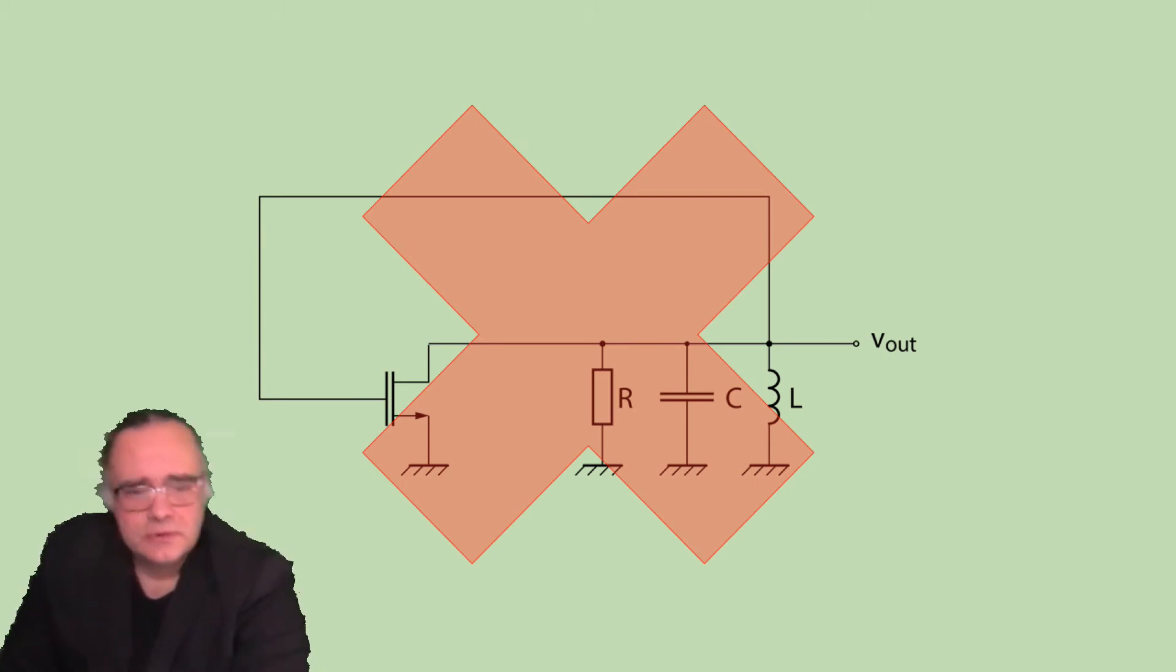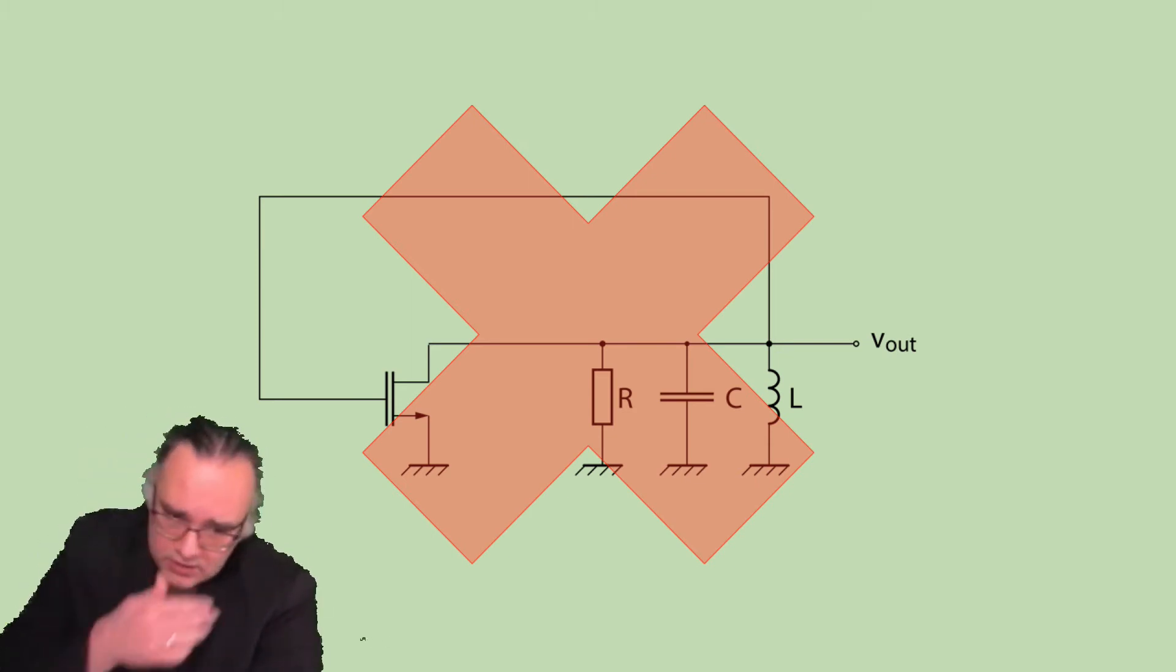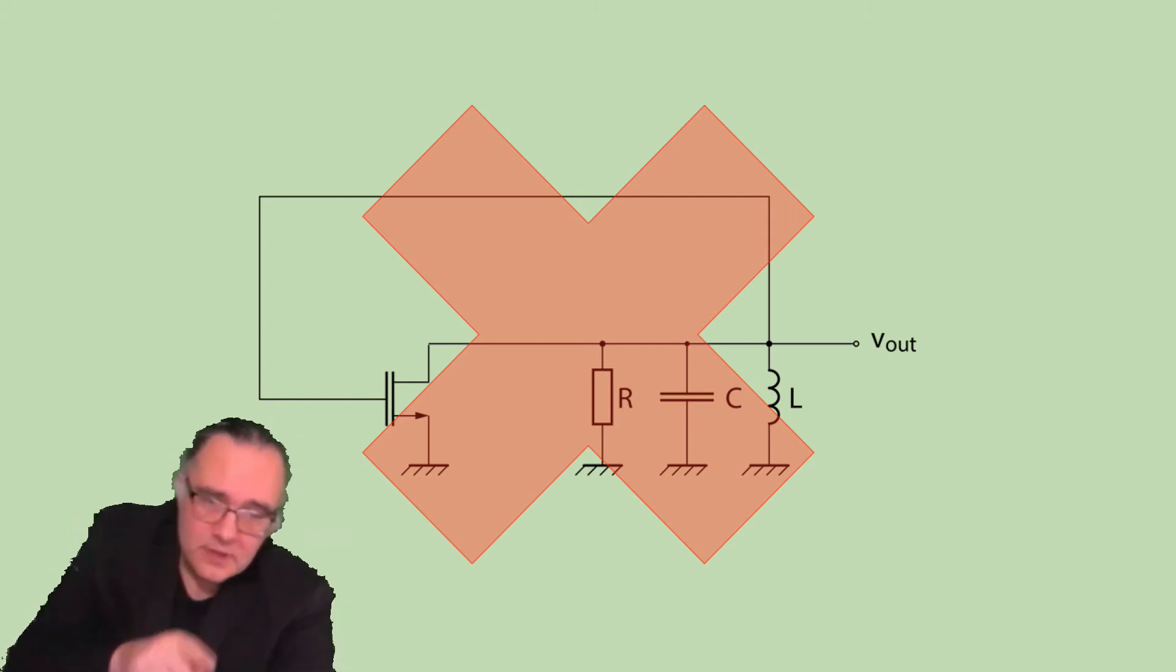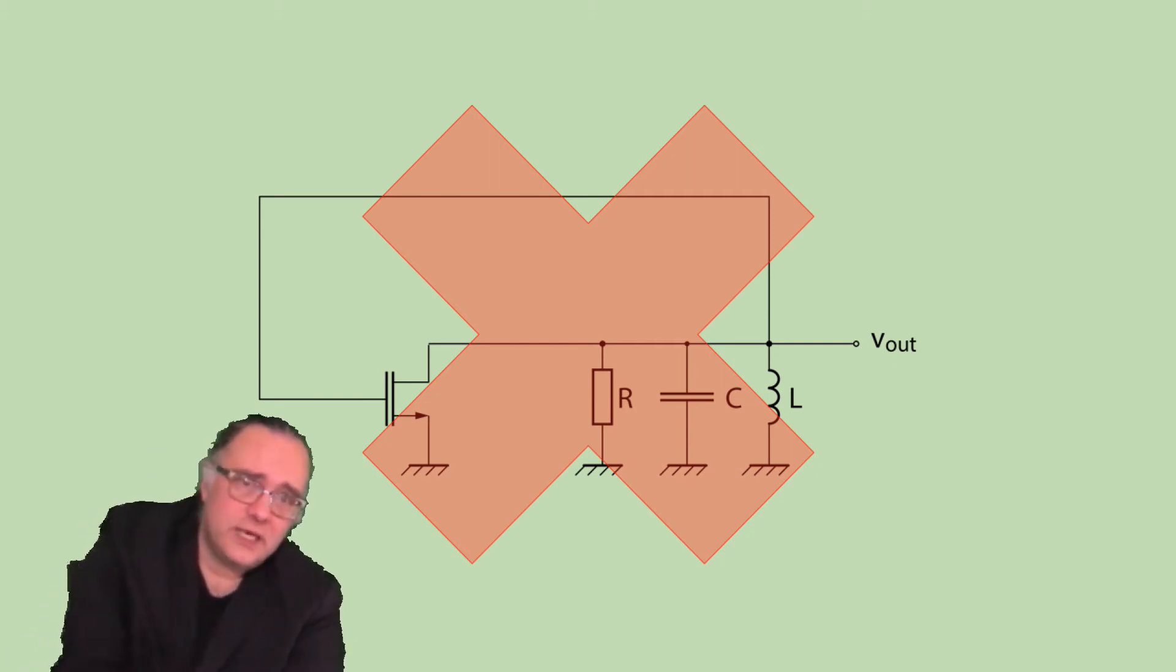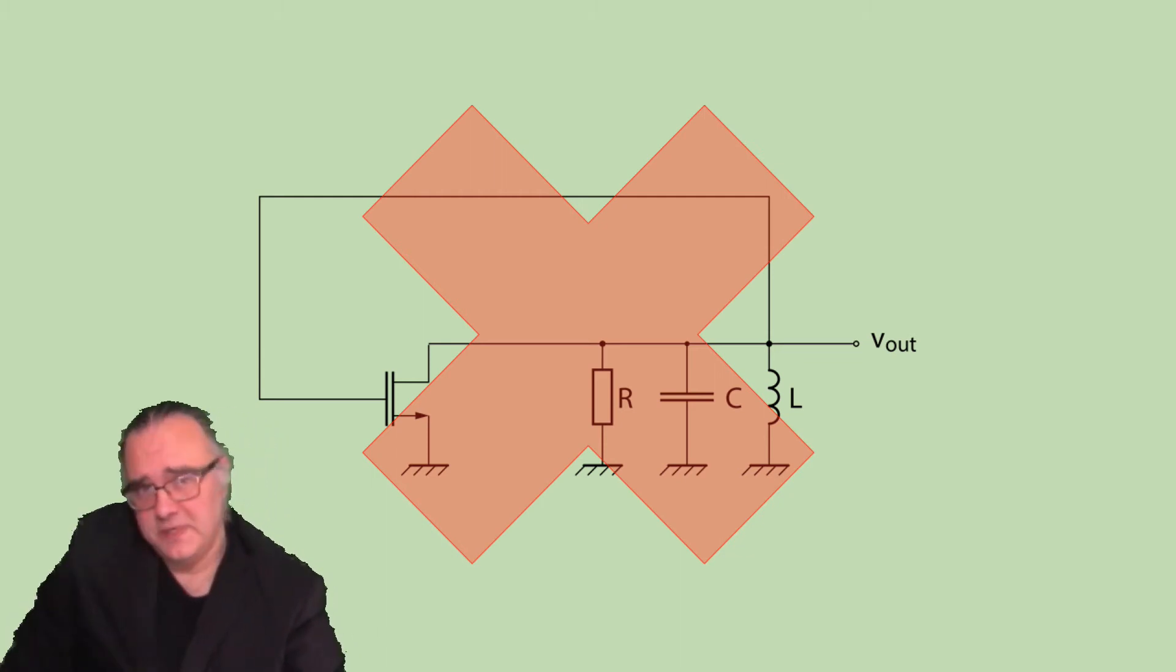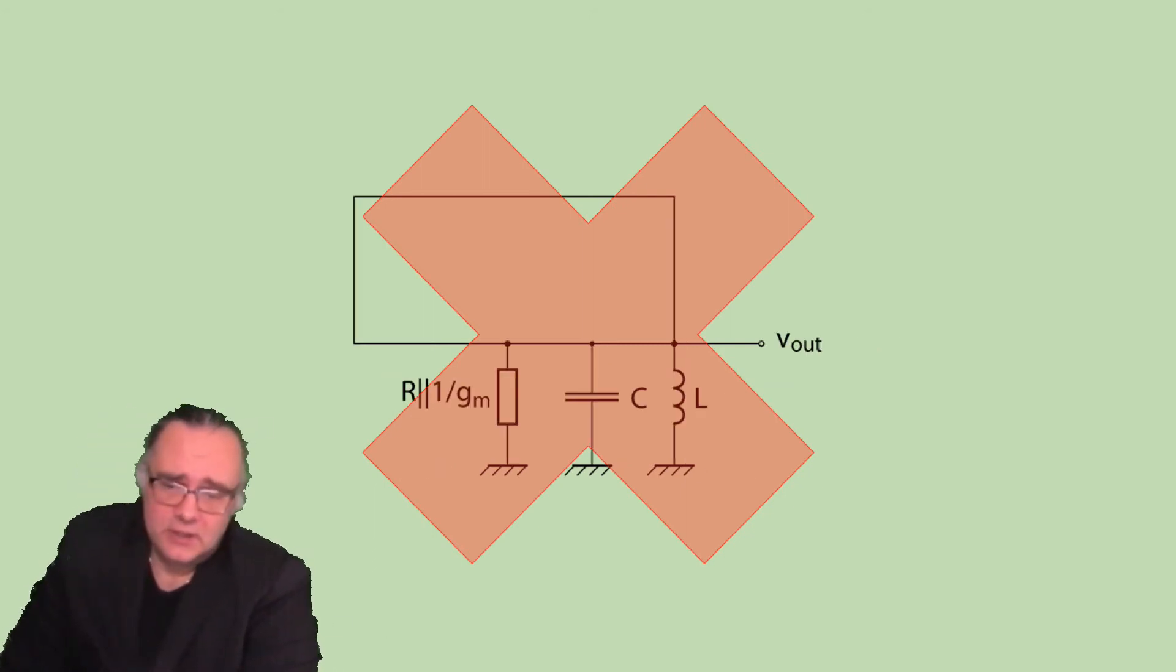If we substitute our GM block with a simple transistor then the drain and the gate of the transistor will get connected. And if the drain and the gate of the transistor are connected this is the so-called diode connected device and its impedance from drain to ground is simply 1 over GM. So we can then substitute simply the transistor with its equivalent circuit 1 over GM and combine it with the resistor as resistance to ground R in parallel with 1 over GM. At the resonance frequency we will have simply Vout and then impedance to ground. So this will not work.